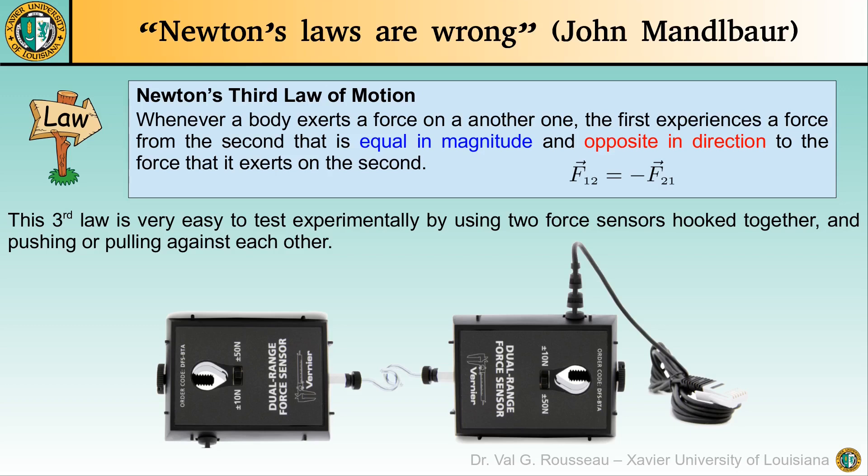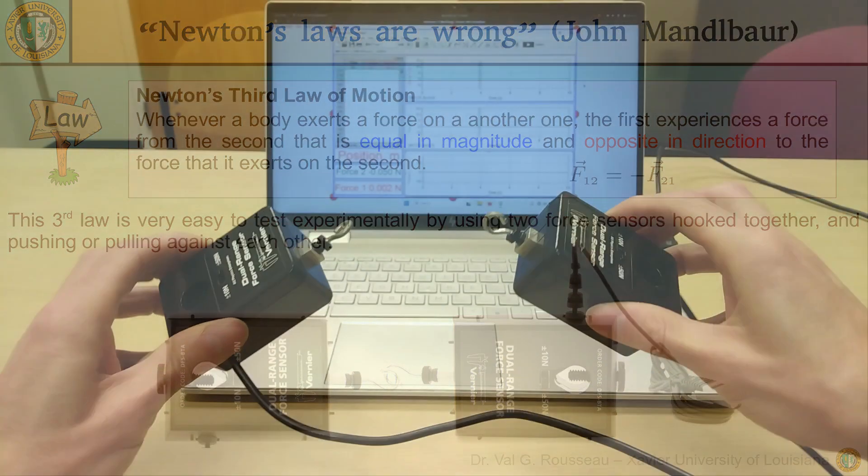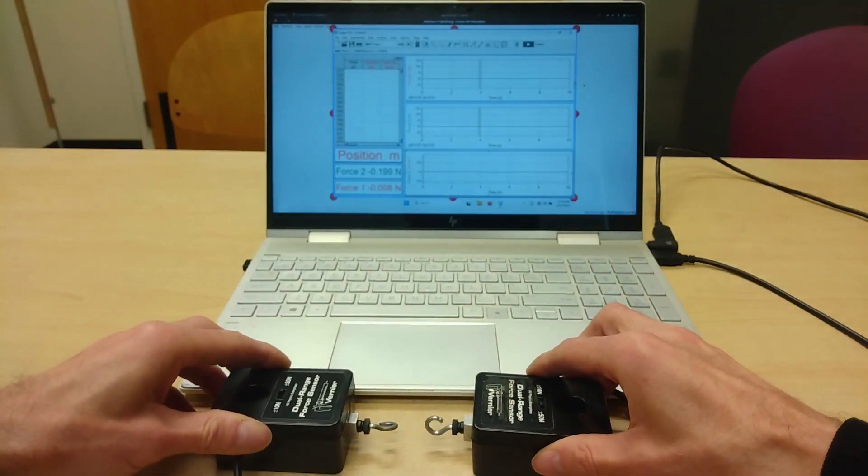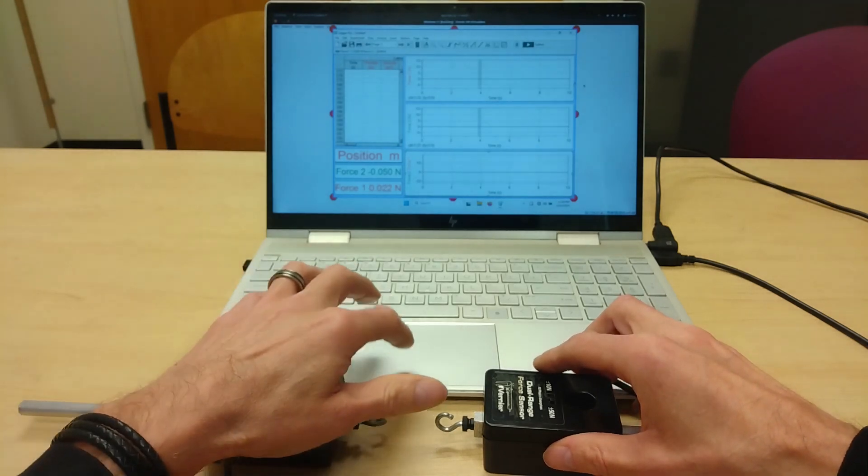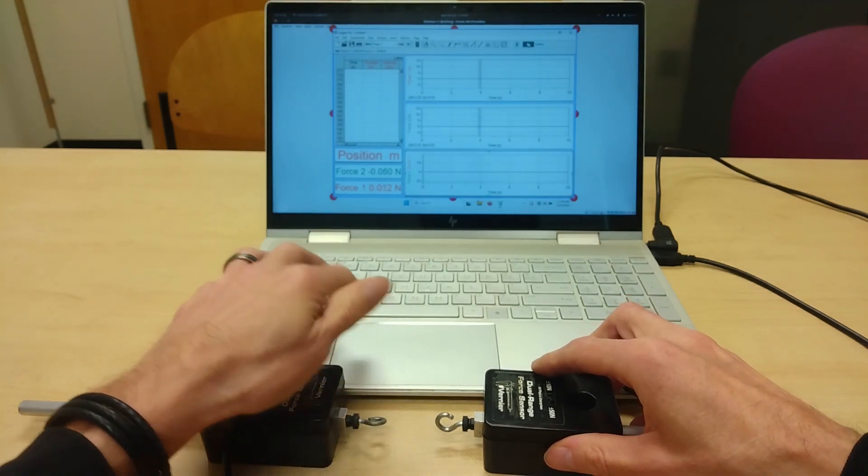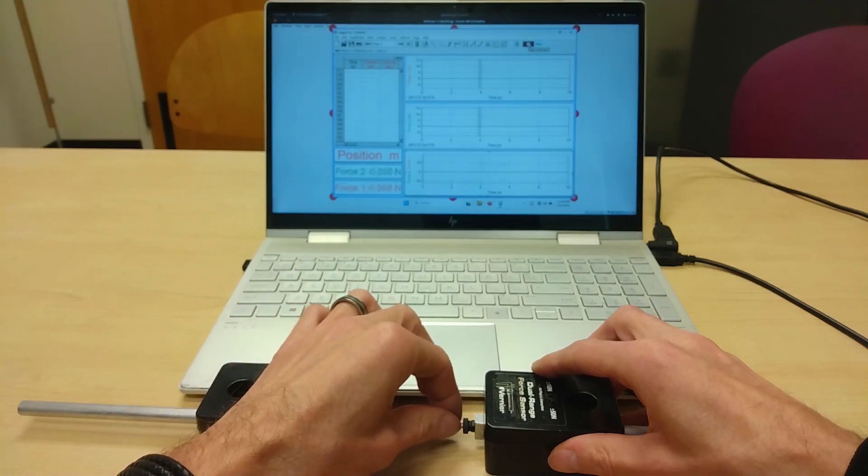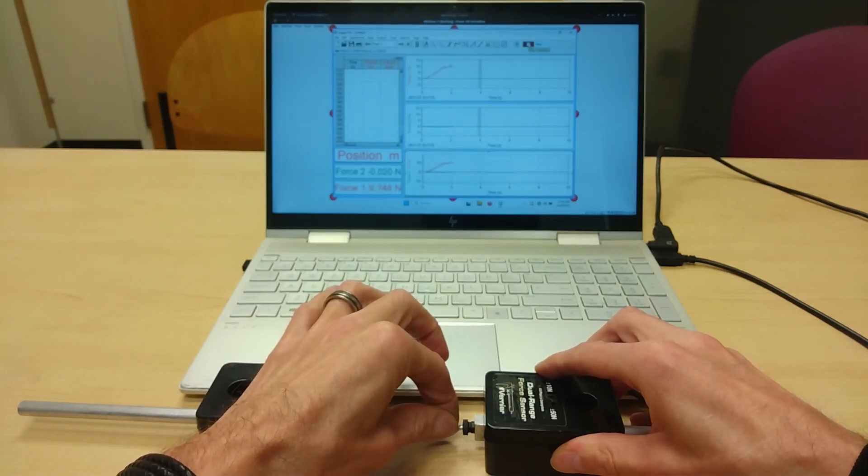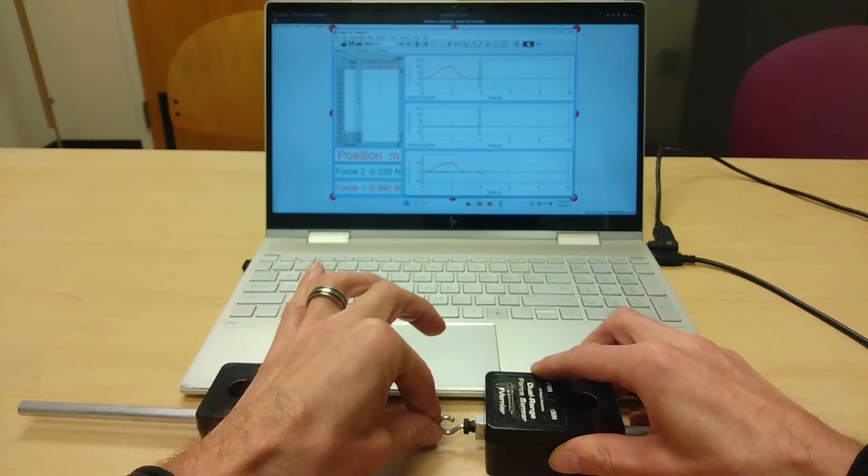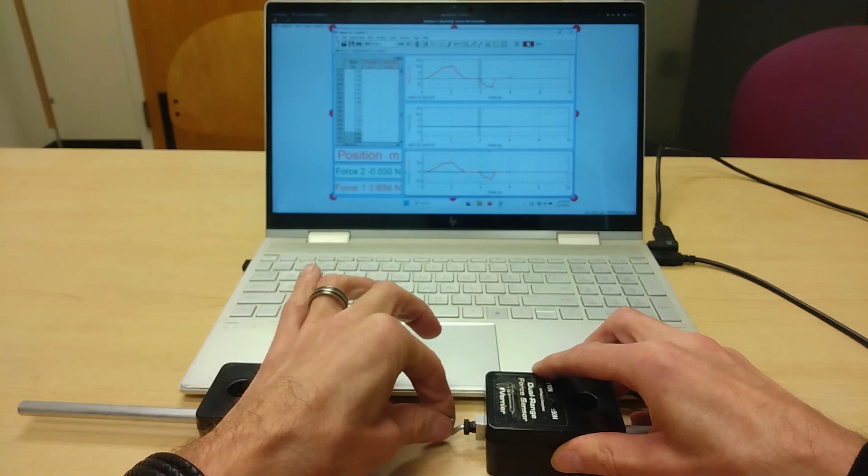So, let us do the experiment. I have here two identical force sensors. Let me collect some data while I pull and push on the right sensor's hook. You see that it records in the top graph a positive value when I pull and a negative value when I push.